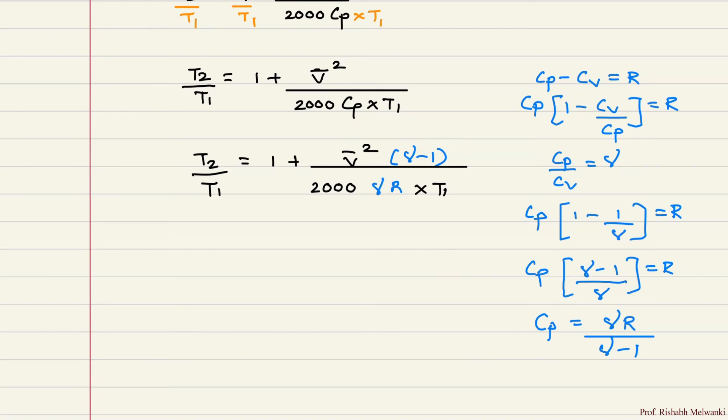the equation of velocity of sound. Velocity of sound C is equal to square root of gamma R T, where C is in meters per second, gamma is adiabatic index,